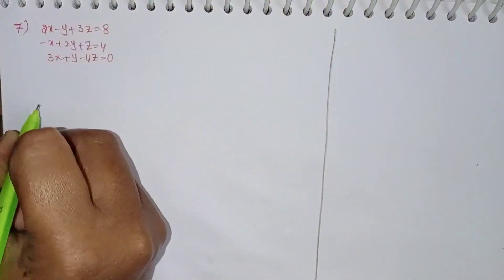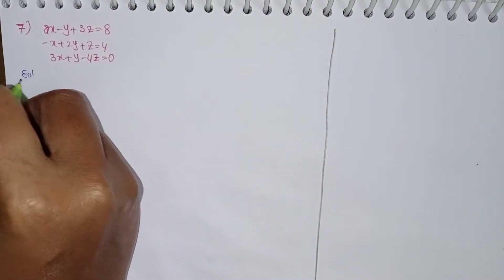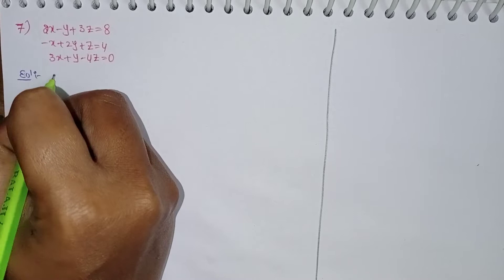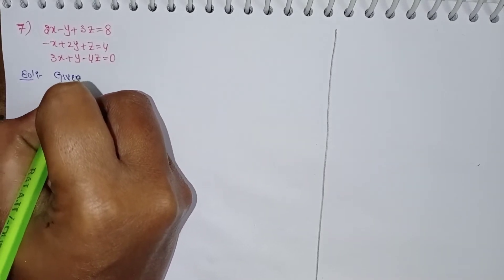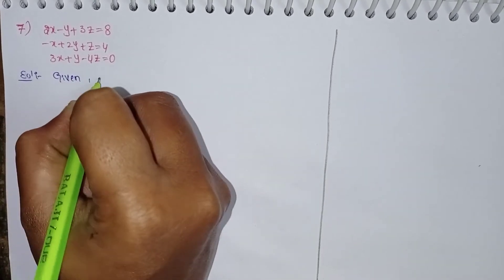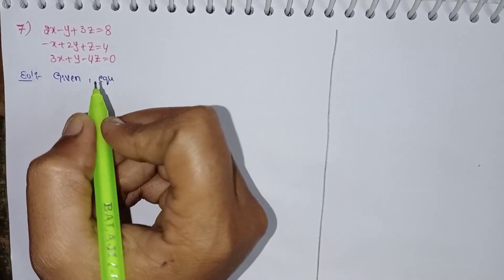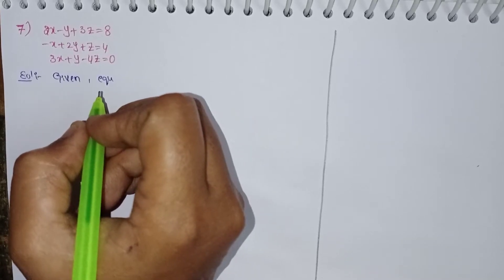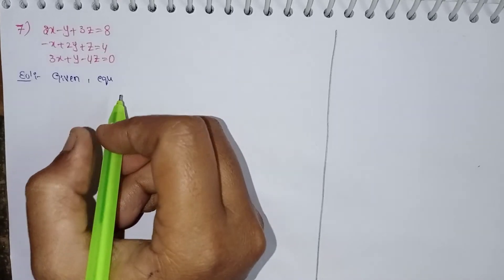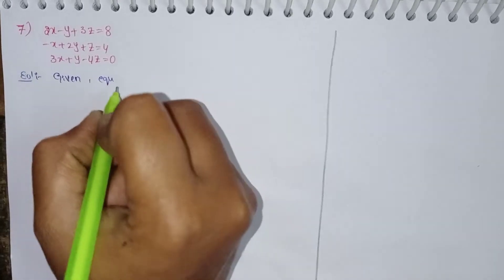Hi viewers, this is Shaheen. Welcome to Learn Something More YouTube channel. Today we will discuss intermediate first year, chapter number 3, matrices, Gauss-Jordan method. Exercise 3H, Gauss-Jordan method, 7th problem.